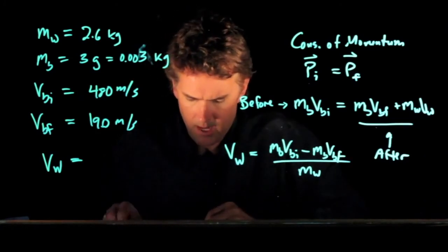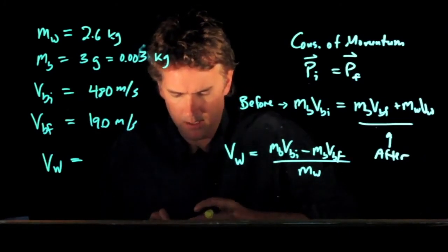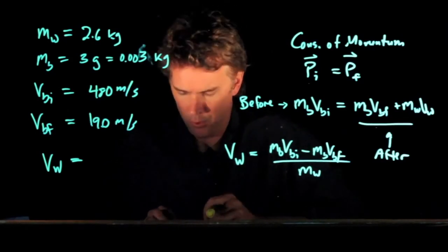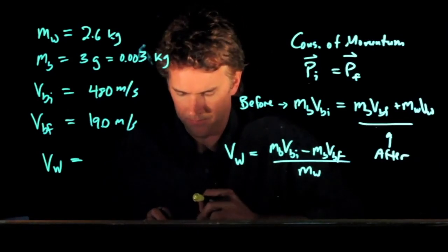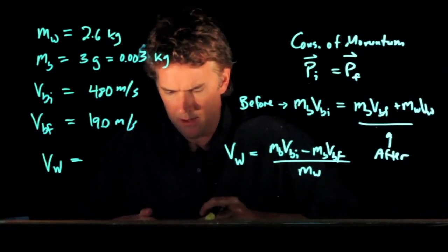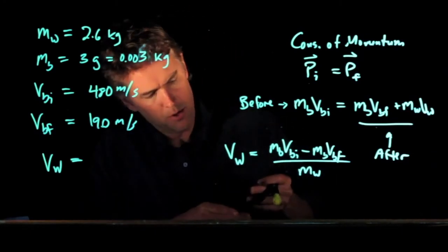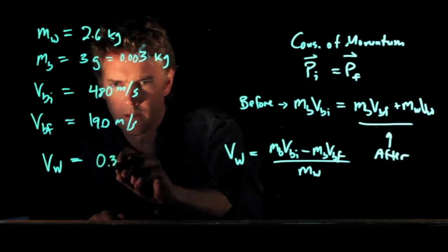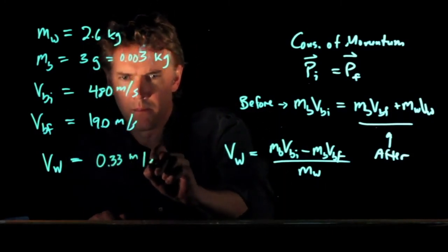And in the numerator, we get 0.87. And we got to divide by 2.6 kilograms. And if you do that, you should get 0.33 meters per second.